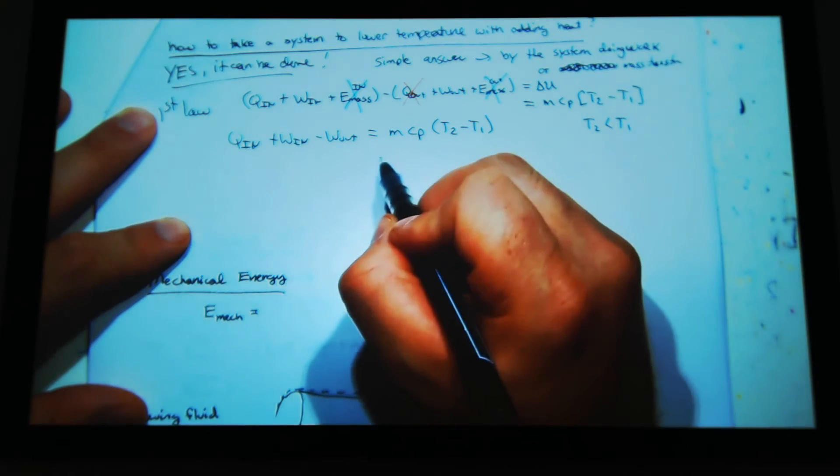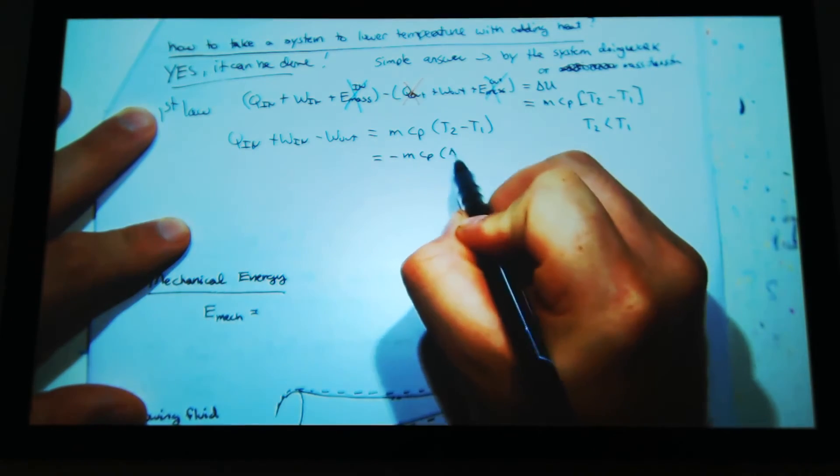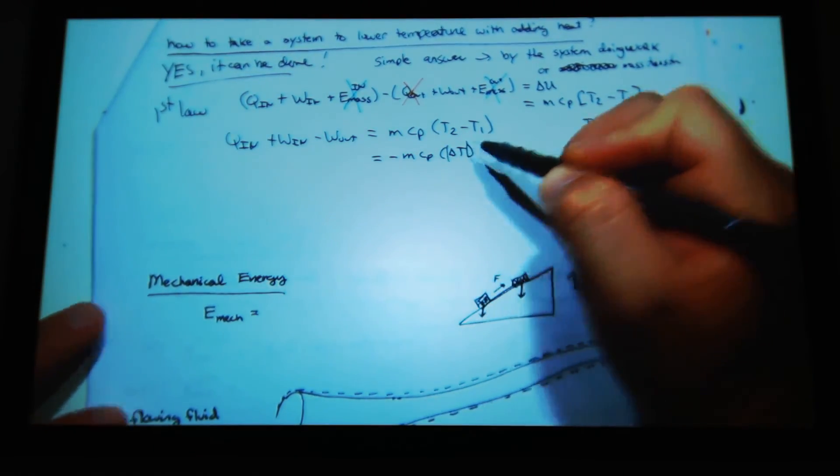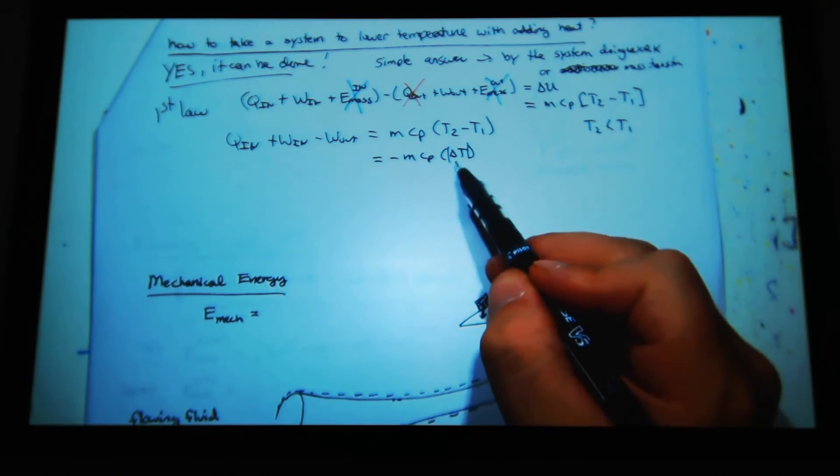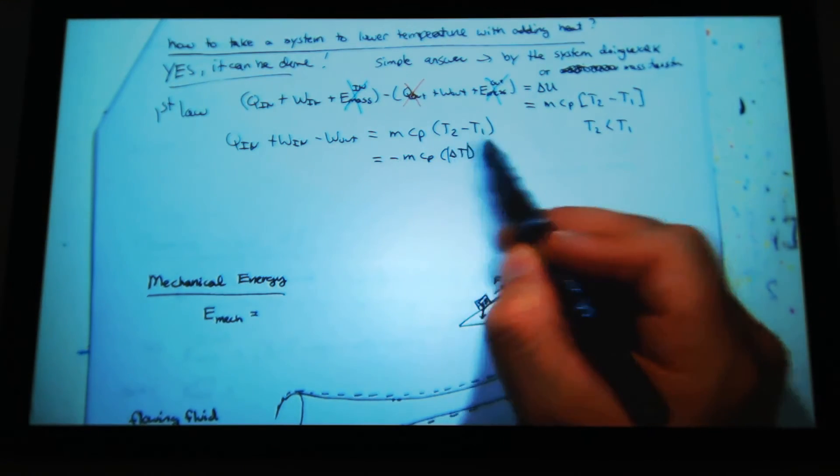So let's do this: minus M CP delta T. And we're just putting the magnitude. So the minus sign here just comes from that.